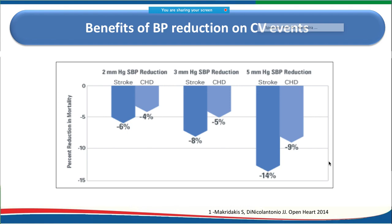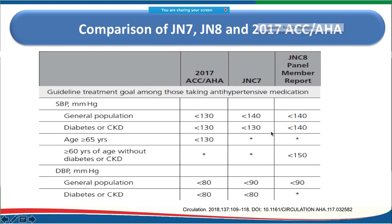Comparing available guidelines — the ACC 2017, JNC7, and JNC8 panel report — the JNC8 report is slightly more lenient. For patients with diabetes or CKD, it accepts up to 140 mmHg, and for elderly patients without diabetes or CKD risk factors, it states that above 150 is not acceptable.